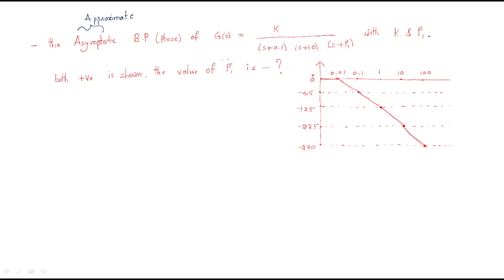We are asked to find the values of K and P1, specifically P1. The phase plot is given with phase values of 0°, -45°, -135°, -225° at different frequencies. For that purpose we will take the open-loop transfer function G(s) and find the phase of G(s).